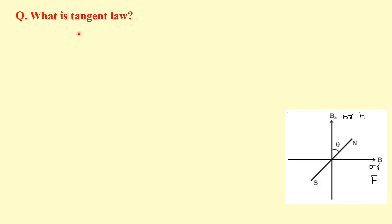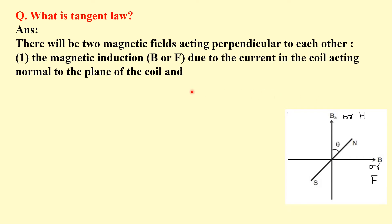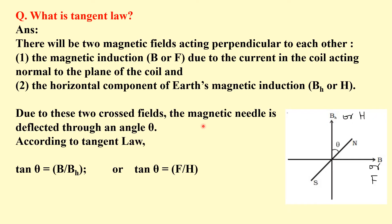Next question is what is tangent law? If we pass the current through the coil we will have some magnetic field B or F and another magnetic field is the horizontal component of earth's magnetic field, that is BH or H. Due to these two fields the magnetic needle will be deflected through an angle theta. According to tangent law, tan theta equals B by BH or F by H. So finally we have B equals BH tan theta or F equals H tan theta. This is the tangent law.